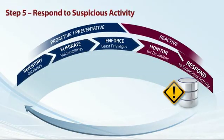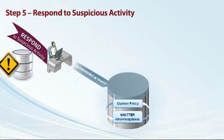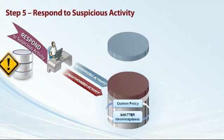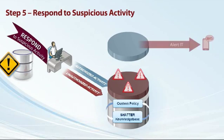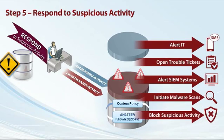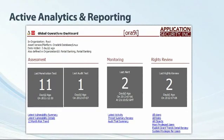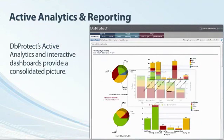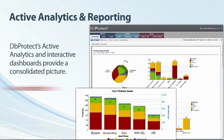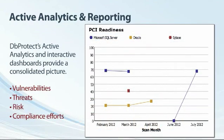Step 5: Respond to Suspicious Activity. DB Protect's Active Response provides an added layer of security by allowing organizations to respond with appropriate actions based on policies, risk level, and business impact of an activity. Analytics and reporting are critical to understanding an organization's overall security and compliance posture. DB Protect's Active Analytics allows security professionals to document current status and demonstrate progress, effectiveness, and operational efficiency.